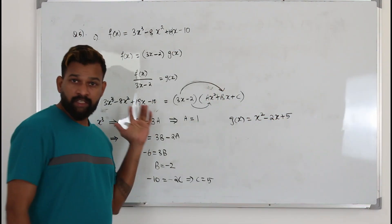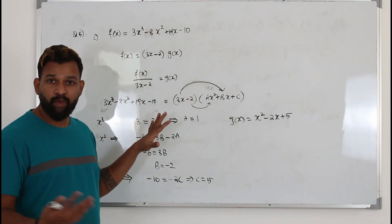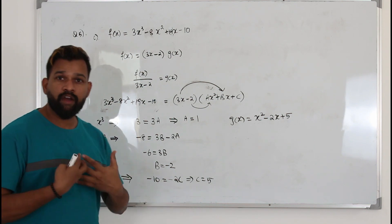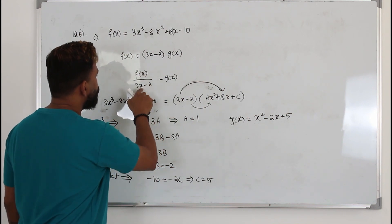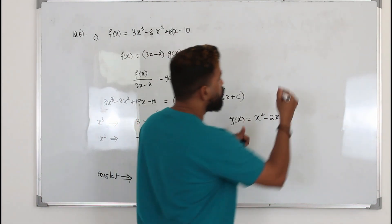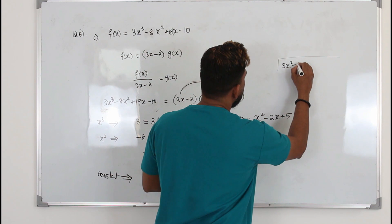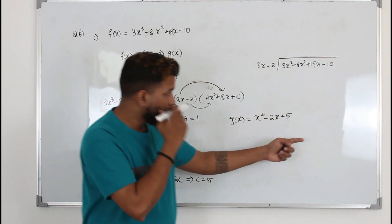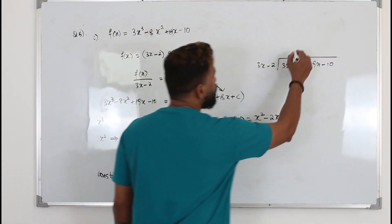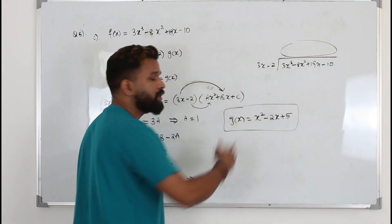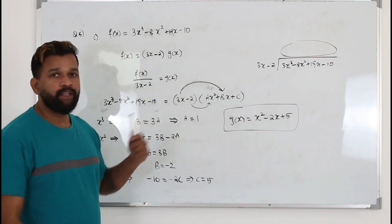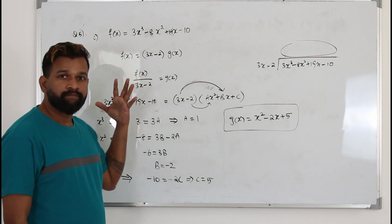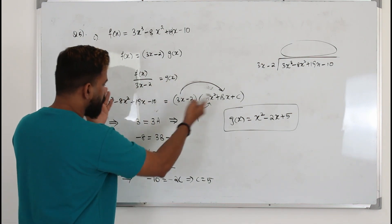This method is called comparing coefficients. It may be new to those taking P1 and P2, but it is one of the easiest methods. If you prefer the long division method, divide f(x) = 3x³ - 8x² + 19x - 10 by 3x - 2. The remainder will be 0 since 3x - 2 is a factor, and the quotient will be the same g(x). Those taking P3 and P4 will definitely learn the comparing coefficients method — you just compare coefficients on both sides to get a, b, and c.